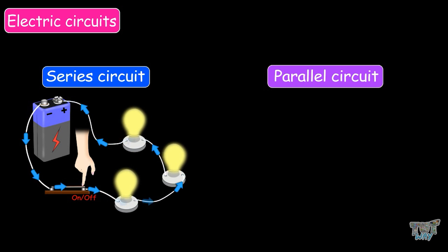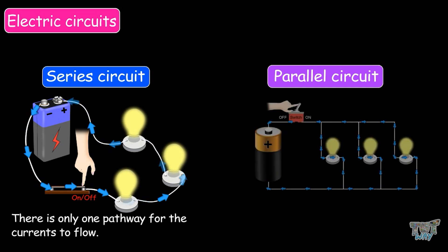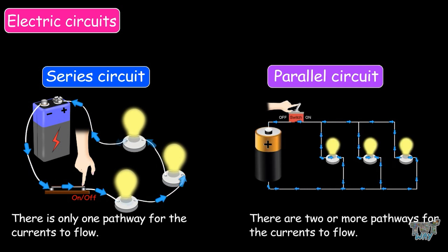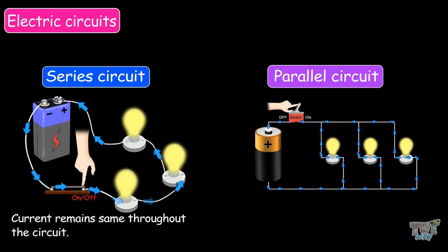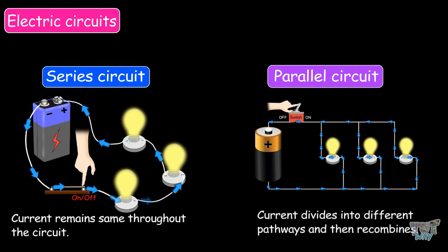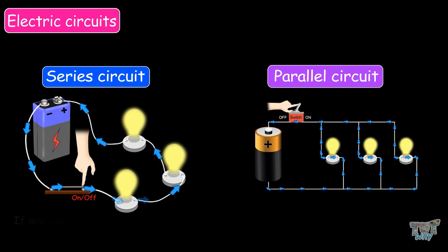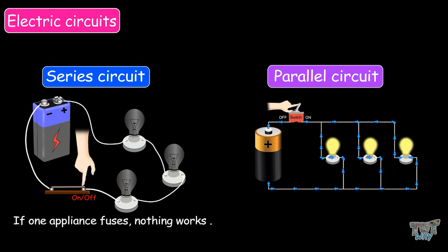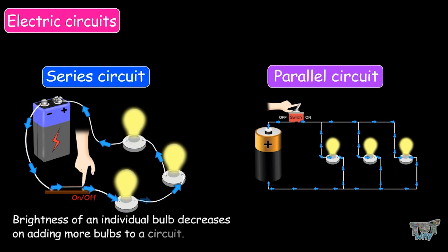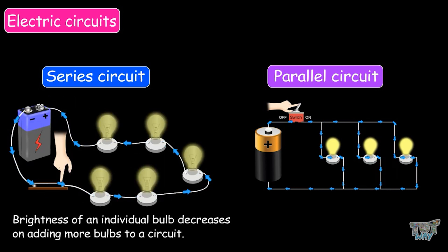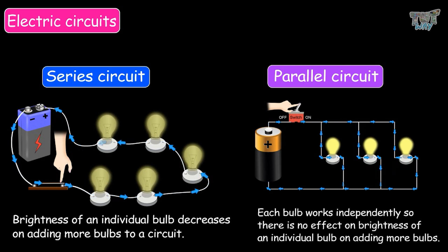Now let's learn the difference between series and parallel circuits. In a series circuit, there is only one pathway for the current to flow, whereas in a parallel circuit there are two or more pathways. In a series circuit, the current remains the same throughout, whereas in a parallel circuit the current divides into different pathways and then recombines. In a series circuit, if one appliance fuses nothing works, whereas in a parallel circuit if one device fuses the other devices can still work. In a series circuit, the brightness of an individual bulb decreases upon adding more bulbs, whereas in a parallel circuit each bulb works independently with no effect on brightness.